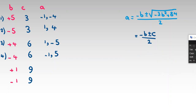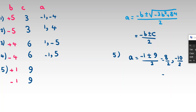Case 5: b = 1, c = 9. Then a = (negative 1 ± 9) / 2. That gives (negative 1 + 9) / 2 = 4, and (negative 1 minus 9) / 2 = negative 5. So a = 4 or negative 5.